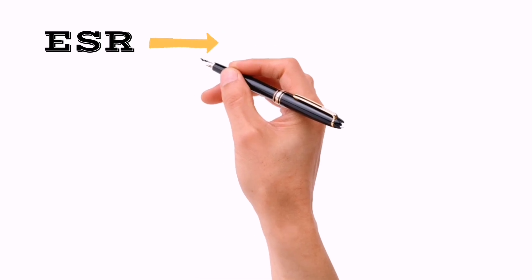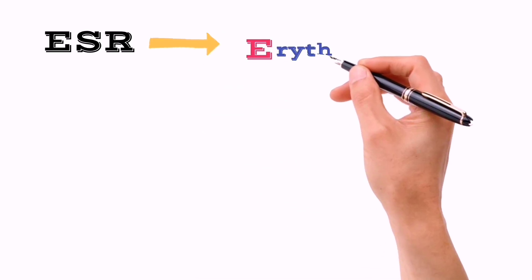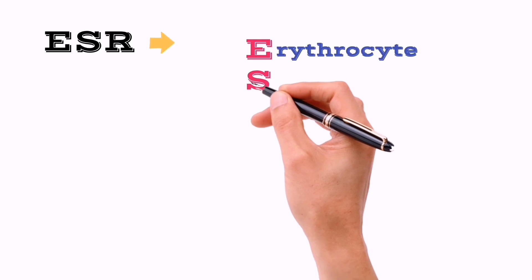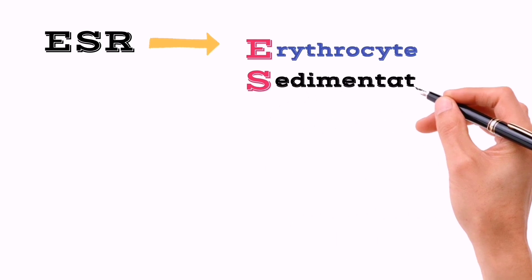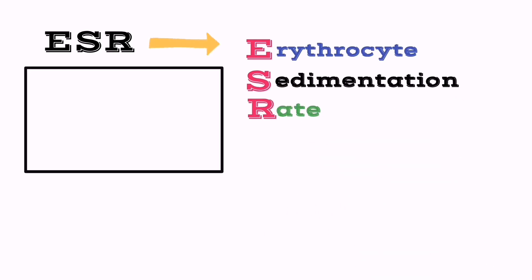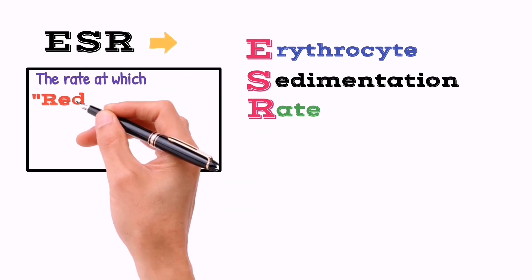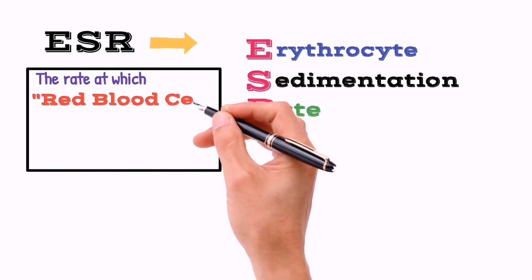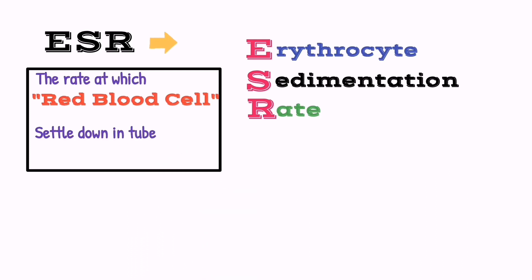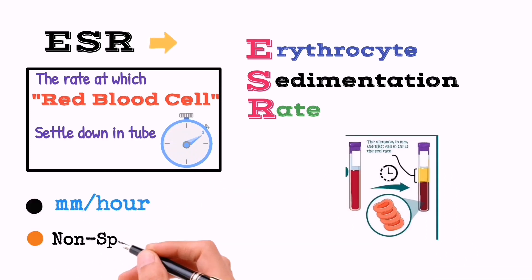So first, what is ESR test? ESR stands for erythrocyte sedimentation rate. ESR is that blood test in which we measure the rate at which red blood cells settle down in a tube within one hour. It is measured in millimeters per hour and it is a non-specific blood test.